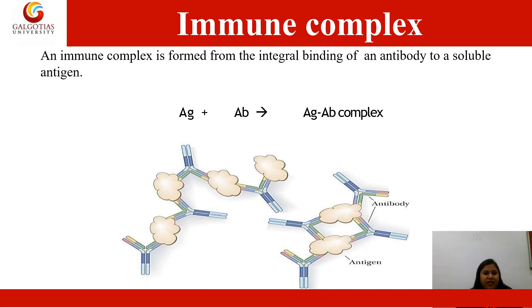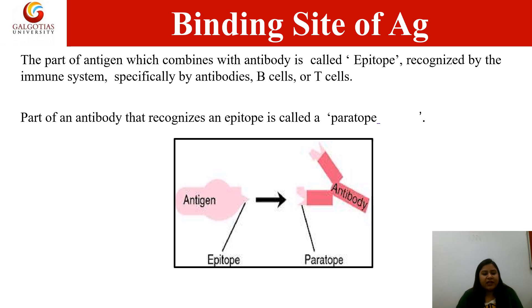An immune complex is formed from the integral binding of an antibody to a soluble antigen. Various types of antibodies bind to a particular epitope of an antigen to form an antigen-antibody complex. The binding site is the part of the antigen which combines with the antibody, also known as the epitope, recognized by the immune system — specifically by antibodies, B cells, and T cells. The part of an antibody that recognizes an epitope is known as the paratope. So the epitope on the antigen combines with the paratope on the antibody to form an antigen-antibody complex.